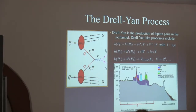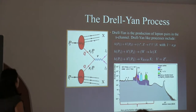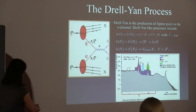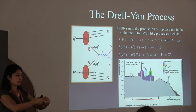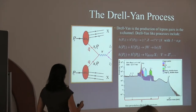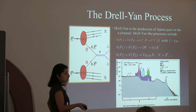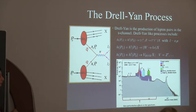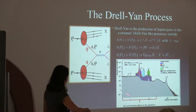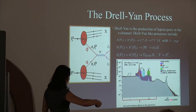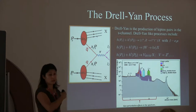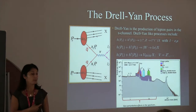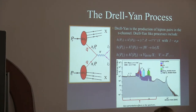Drell-Yan is the production of a lepton pair in the s-channel. You can do this by colliding a proton-proton beam, a proton-antiproton beam, or a proton-nucleus case — either two beams or a beam on a fixed target. You can produce leptons through an off-shell photon, Z, or W, or search for new physics particles like Z-prime and W-prime. By studying the dilepton invariant mass over orders of magnitude, we have discovered many resonances: the Z boson, the J/psi, and the Upsilon were all discovered in Drell-Yan.